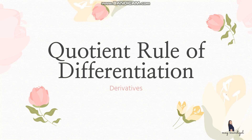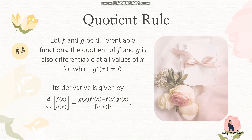For today's lesson we will be discussing the quotient rule of differentiation. Last time we discussed the product rule, so this time we will be focusing on the quotient rule. Let f and g be differentiable functions. The quotient of f and g is also differentiable at all values of x for which g of x is not equal to zero.